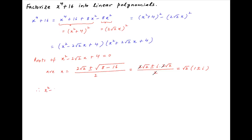Therefore x² - 2√2·x + 4 can be factorized into (x - √2·(1 + i))(x - √2·(1 - i)).